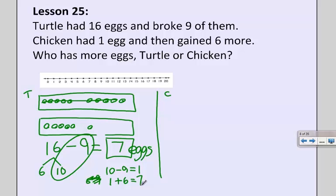Now we need to figure out who has more. So I need to look at how many eggs chicken has. Well, chicken's picture is kind of easy because chicken started with one egg, and then chicken gained six more. So I'm just going to draw six more eggs.